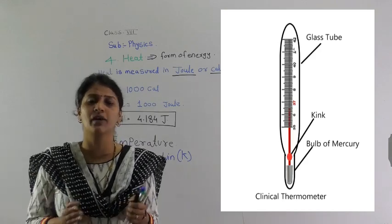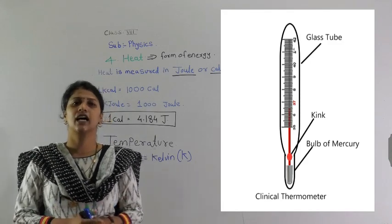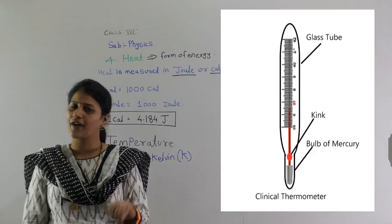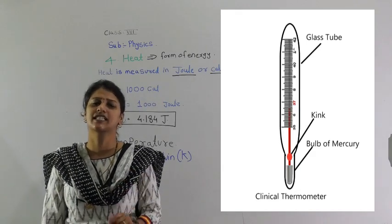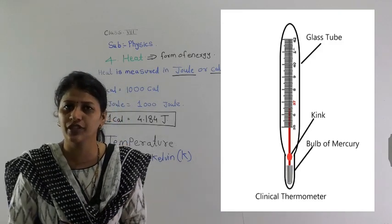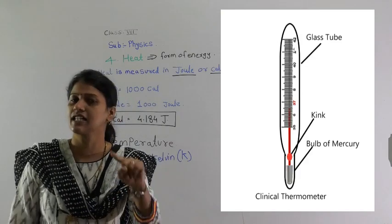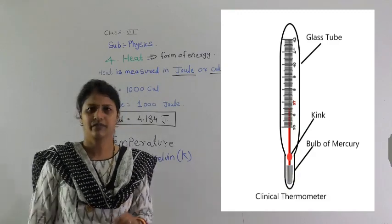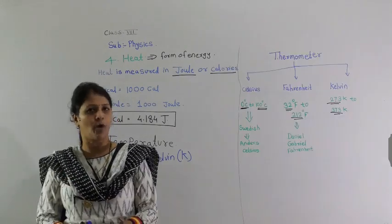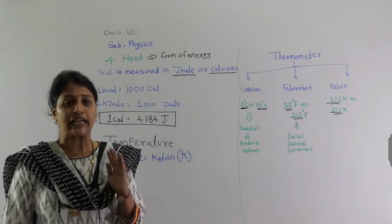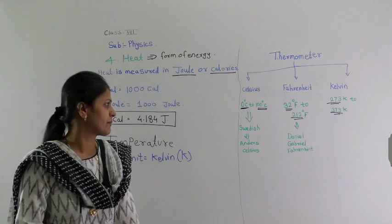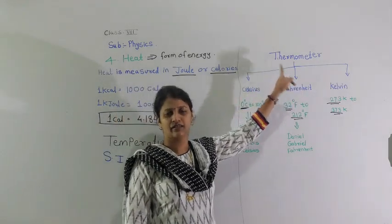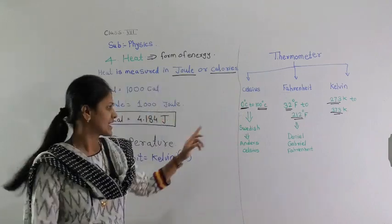The normal body temperature of a human is 37°C, or 98.6°F in Fahrenheit. There are two scales on the clinical thermometer: Celsius and Fahrenheit.